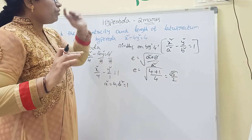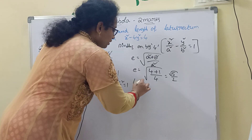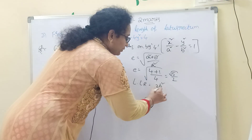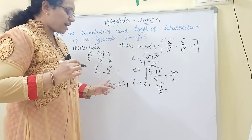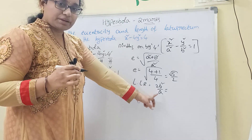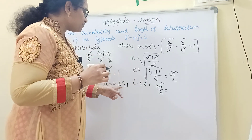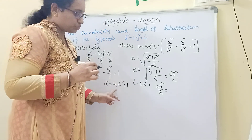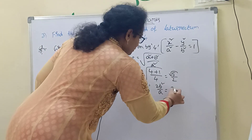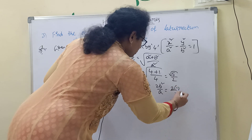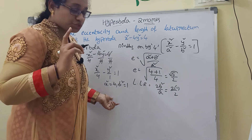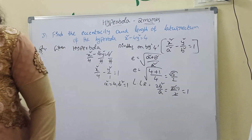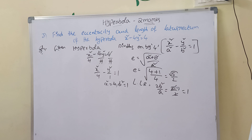Now, the length of the latus rectum. The formula is 2b²/a when a is greater than b. Here a² = 4 so a = 2, and b² = 1. Substituting: length of latus rectum = 2 × 1 / 2 = 1. Therefore, the length of the latus rectum is 1.